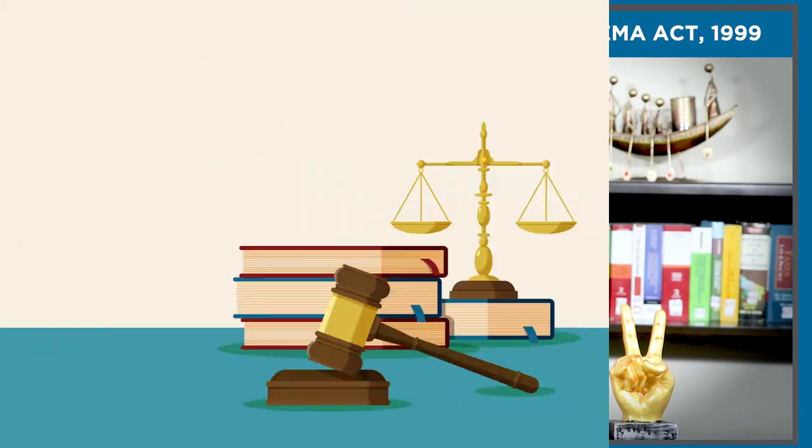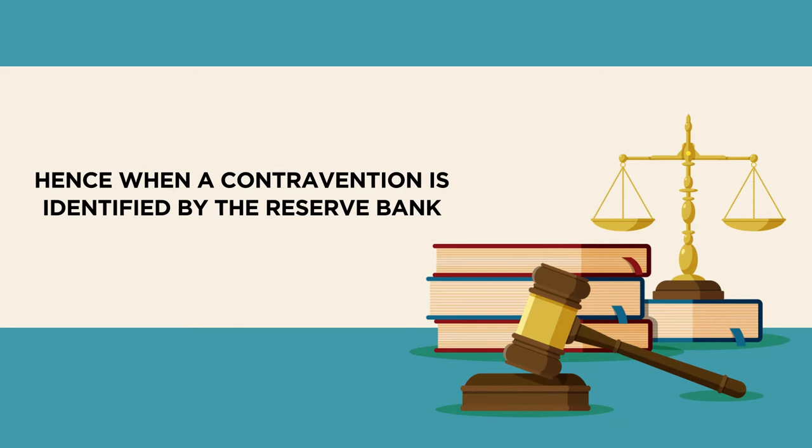Further, no breach can be compounded under Rule 2 of Foreign Exchange Management proceedings in cases where the DOE has adjudicated the matter and an appeal has been lodged under Section 17 or 19. The petitioner should confirm in an undertaking submitted along with the compounding application that they have not filed an appeal under Section 17 or 19 of the FEMA Act. Hence, when a contravention is identified by RBI or notified by the entity involved, banks must examine whether it should be compounded following the prescribed process, or whether the issues are serious or sensitive and should be referred to the Directorate of Enforcement.